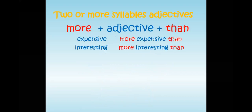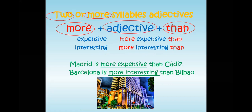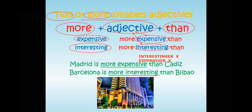Pay attention to this because many students get confused. When you have two or more syllables, you use 'more' before the adjective and always use 'than'. The adjective itself stays the same — it does not change. Don't add -ER to multi-syllable adjectives; that's incorrect.